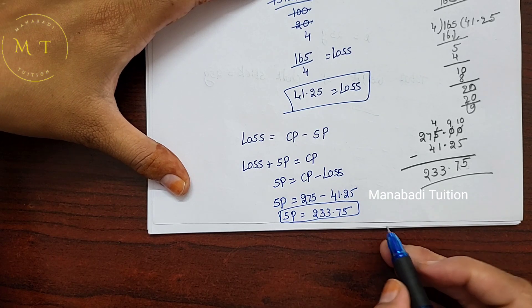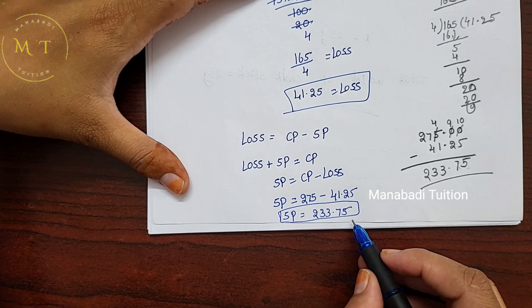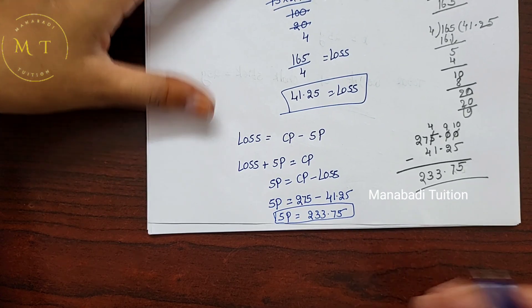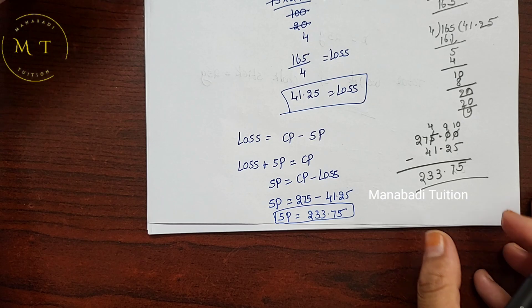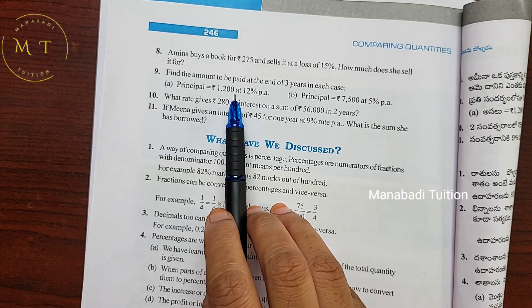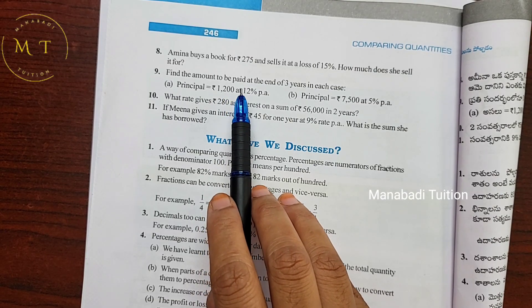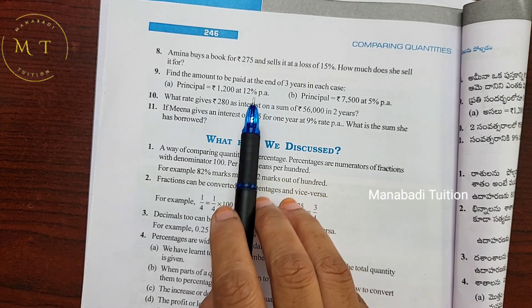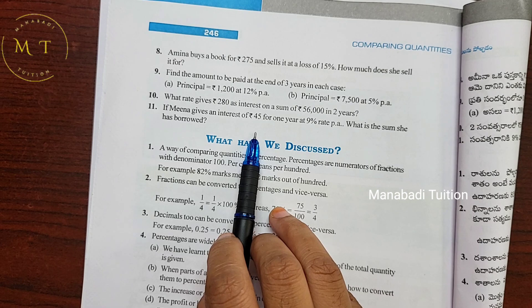Okay, so we found the selling price. Next, question numbers 9, 10, and 11.